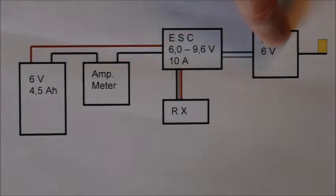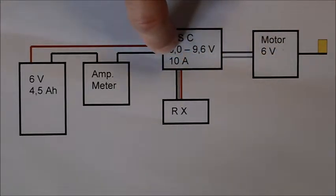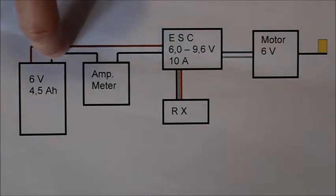Between the speed controller and the battery an ampere meter is connected that measures the flow of current.